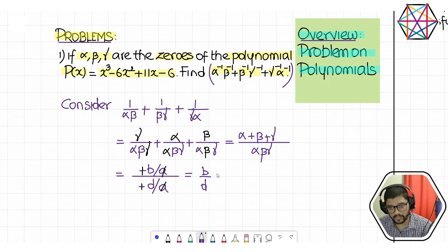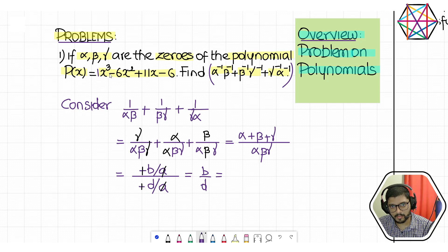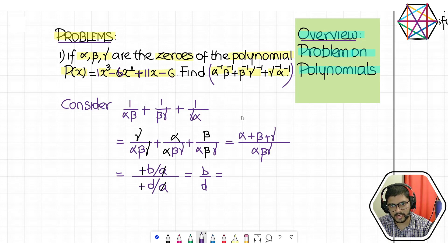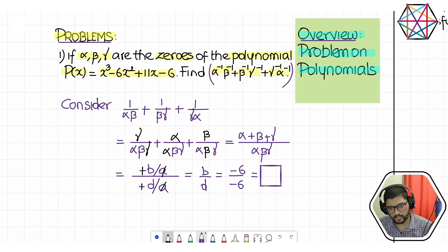We need to correctly identify a, b, c, d from the polynomial. Here a = 1, b = −6, c = 11, and d = −6. So b/d is (−6)/(−6), which equals 1. The final answer is 1.